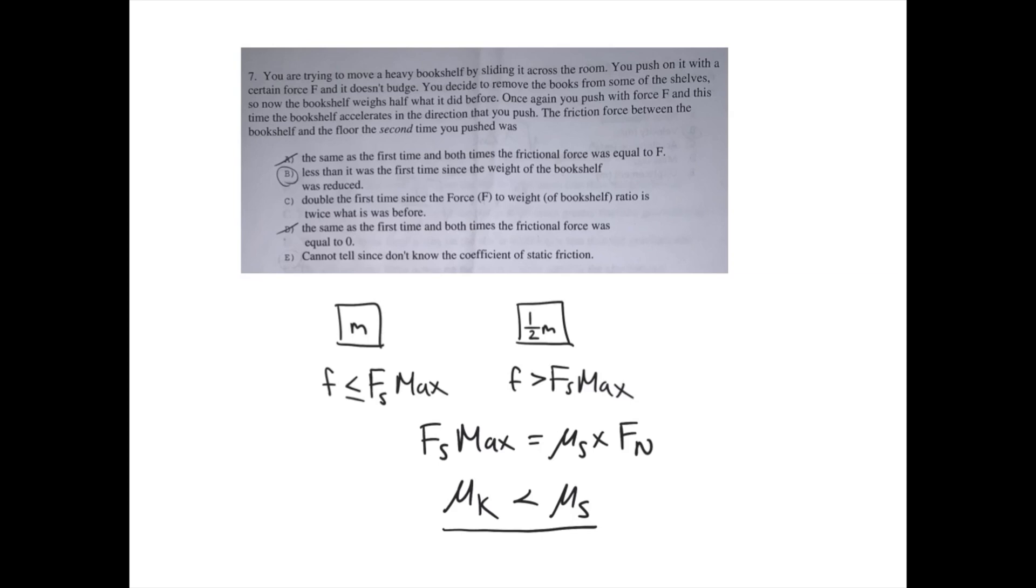Given this, we can assume that the friction force between the bookshelf and the floor the second time you pushed was less than it was for the first time since the weight of the bookshelf was reduced, and therefore the kinetic coefficient of friction is now being used when calculating friction between the bookshelf and the floor.